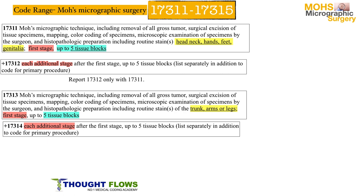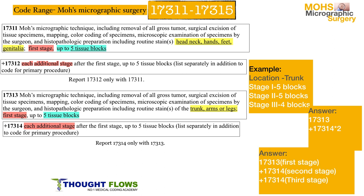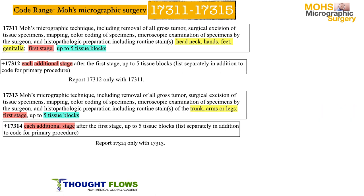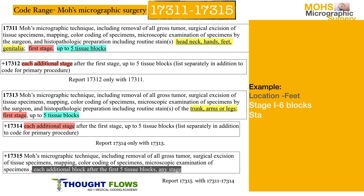The add-on code 17314 is used for each additional stage after the first stage, and this add-on code is used only with 17313. For example, if the location is trunk and the doctor performs three stages, we code the first stage as 17313 and each additional stage as 17314 times two. Code 17315 is used for each additional block after the first five tissue blocks, irrespective of any location or any stage.